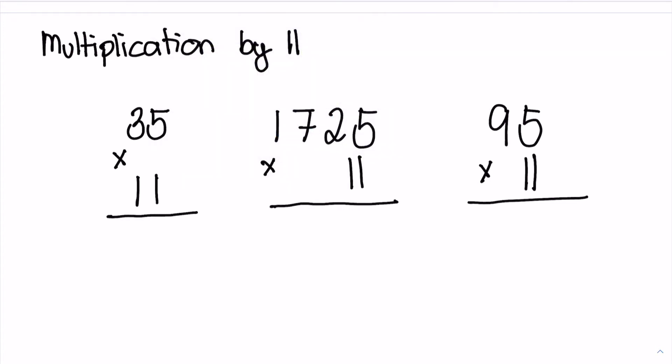This is a shortcut for multiplication by 11. So let's multiply 35 times 11. Copy 3, copy 5, and then you add 3 and 5, so we have 8. Let me put it in the center.